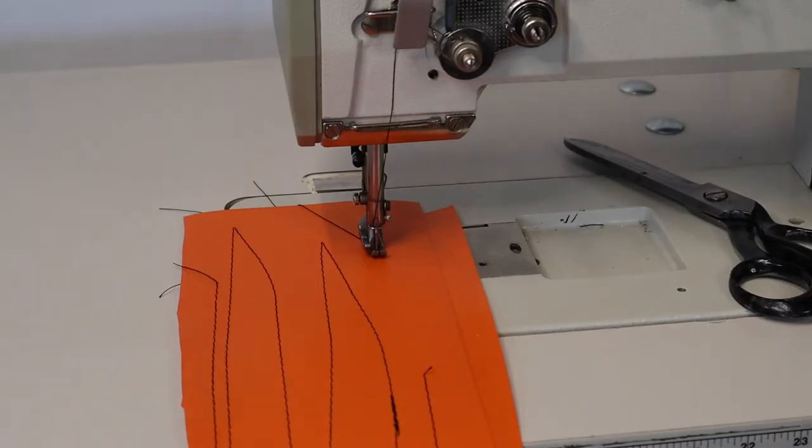The compound walking foot mechanism on this machine will easily sew through even several layers of the heaviest materials. Here you can see that we're sewing through two layers of 18 ounce Shelterite.